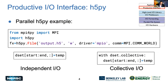Moving on to the productive interface, one of the most used libraries for storage in science is H5Py, which offers an abstraction over HDF5 calls. You can see how to open an HDF5 file with H5Py in parallel mode using MPI.IO — you import MPI for Python, import H5Py, and then specify the driver and the communicator to the H5Py interface. Once a file has been opened in parallel, IO can either be performed by each process independently or by coordinating with other processes.